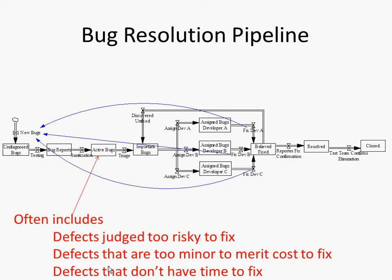Sanitization may also involve assigning priorities and severities to the bug report, actually classifying how serious is this thing — in terms of severity of the problems it can cause, and how high priority is it. Give me some examples of things that are high severity. Locks the entire system — locks up your phone — of course requiring a cold start. Or it just bombs out, crashes.